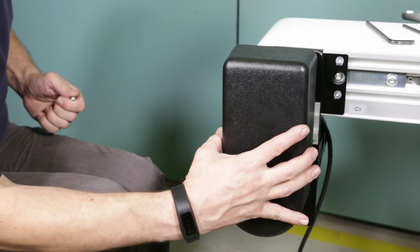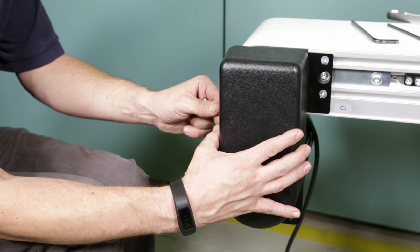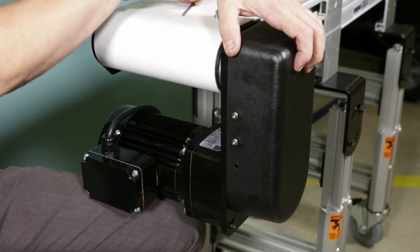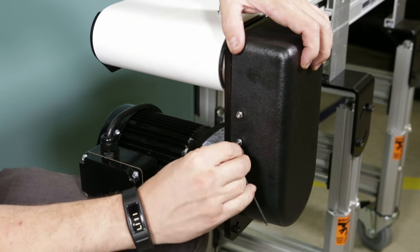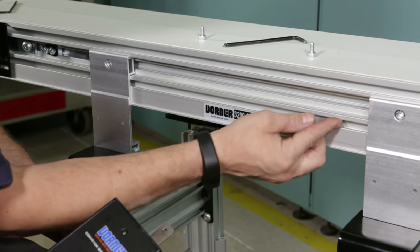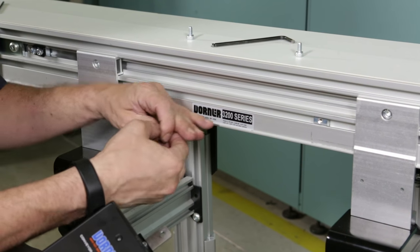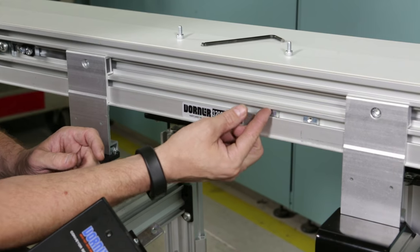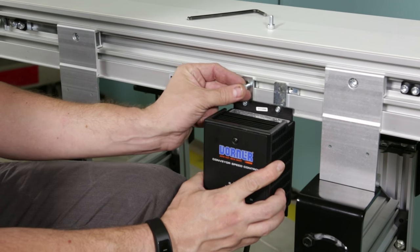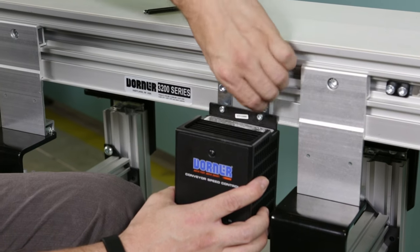Install the cover with four screws and tighten the screws. To mount the controller, install the T-bars into the T-slot of the conveyor and attach the controller to the conveyor with two socket head screws. Tighten the screws.